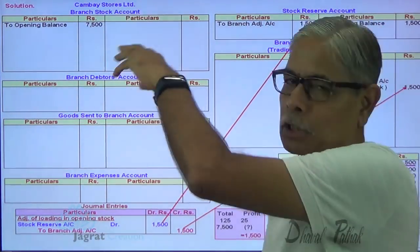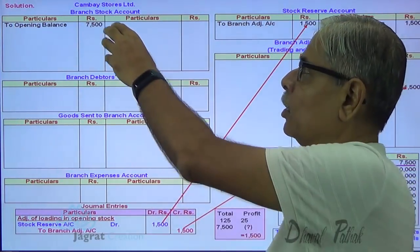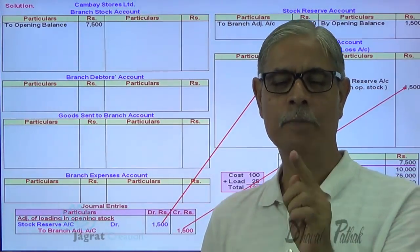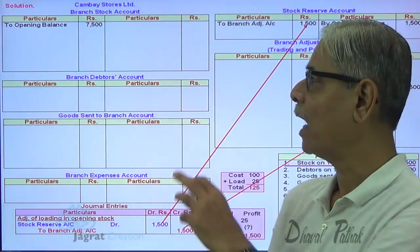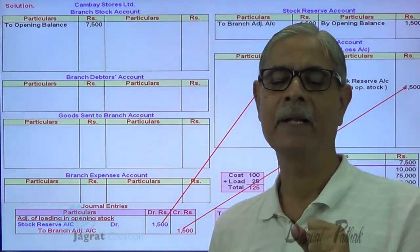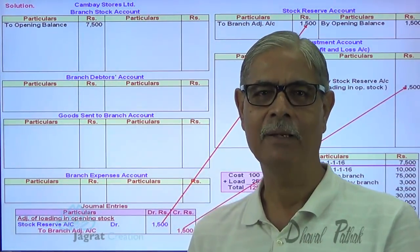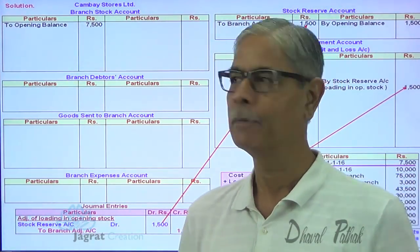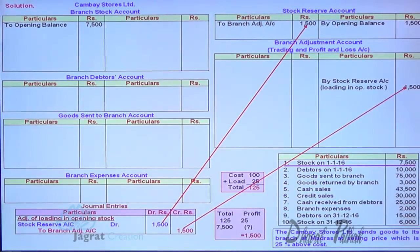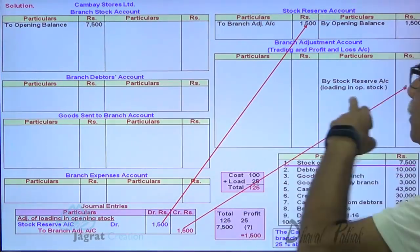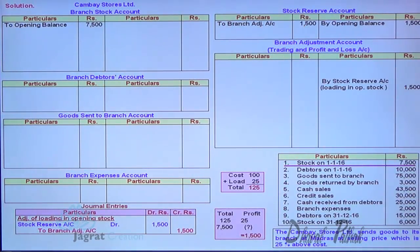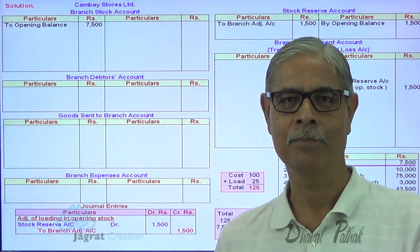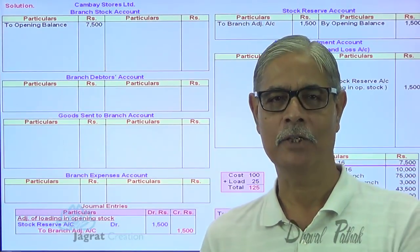The branch stock account is prepared at an invoice price. To adjust for the difference between invoice price and cost, the adjustment entry for the load (profit element) is to be recorded, and all adjustment entries for the profit element are identified in the branch adjustment account. So the branch adjustment account is prepared to remove the profit element that has been incorporated in the transactions of the branch stock account. Opening stock of 7,500 — the profit element (stock reserve) is recorded in the branch adjustment account.